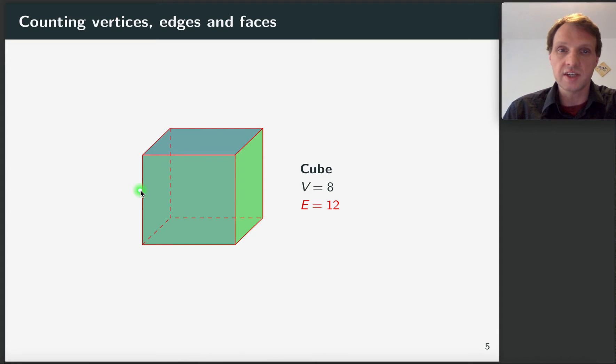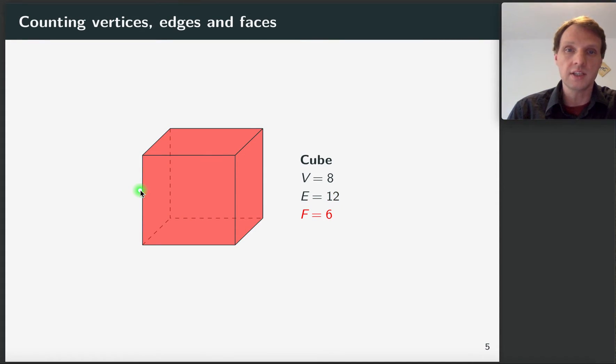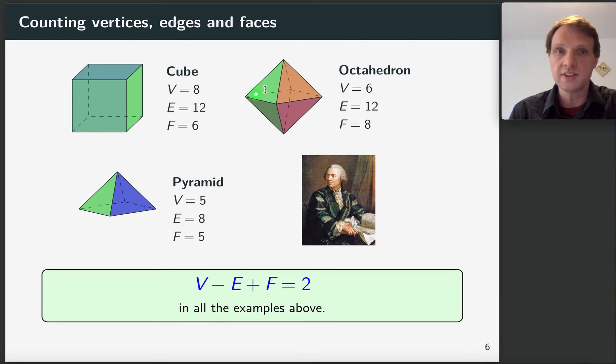And since this is also the six-sided die, it also has six faces shown in red here. You can compute these numbers for all kinds of different shapes. And this is done on the next slide. So here you have the numbers for the octahedron, which looks like this, and for the pyramid, which looks like this.